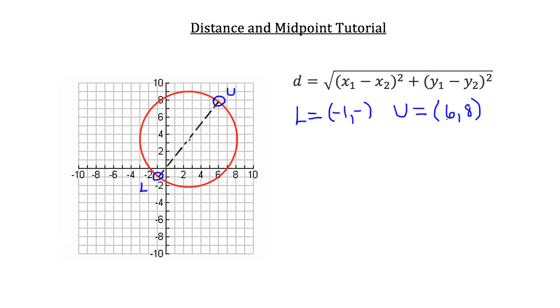So now we can use the distance formula and calculate the distance between those. As we've seen the distance formula already, we're going to go a little faster this time. So point L will make our point 1 and point U will make our point 2. So distance is equal to the square root of the x coordinate of point 1, negative 1, minus the x coordinate of point 2, which is 6, quantity squared,